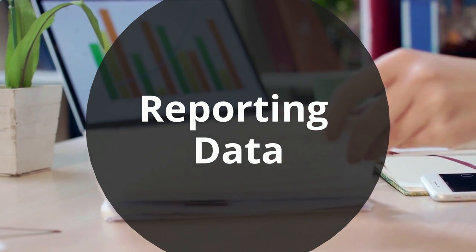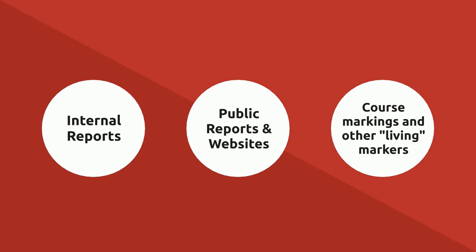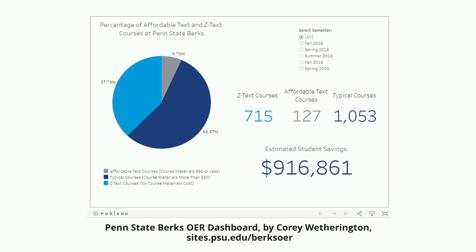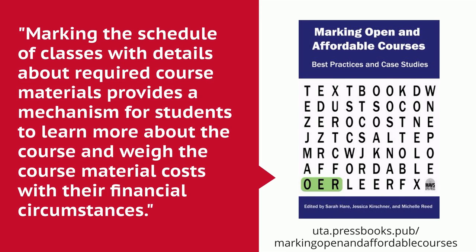Which brings us to our final section: reporting data. Once you've pulled together your data into some semblance of normalcy, you have to report it somehow. You can report in a few ways: internal reports, public reports and websites, and course marking initiatives or other living markers of impact. A good example of a website showcasing OER is Penn State Berks's OER dashboard set up by Corey Weatherington as part of his SPARC Open Education Leadership capstone in 2019. This site captures the impact in number of OER courses across his campus and features them in a live Tableau dashboard. Another option might be to utilize course markings or public markings for class sections using no-cost and low-cost course materials. These are becoming a common way of improving cost transparency for students in higher ed. You can learn more about the hows and whys of course markings in the book featured here and linked in the description of the video.